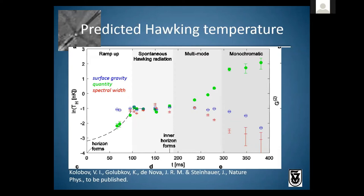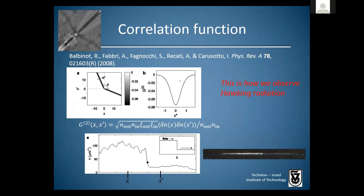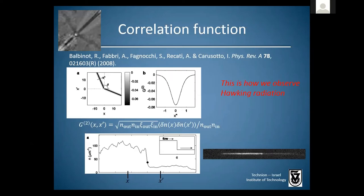To see the Hawking radiation, we follow the suggestion in the literature and look at the correlation function. We take an ensemble-average density profile and look at two points x and x-prime on opposite sides of the horizon. If the horizon is emitting pairs, points x and x-prime should have correlated density fluctuations as long as the two points are at equal propagation times from the horizon. If we plot the correlation function as a function of x and x-prime, we expect a band of points where each point on the band corresponds to a pair at equal propagation times from the horizon.